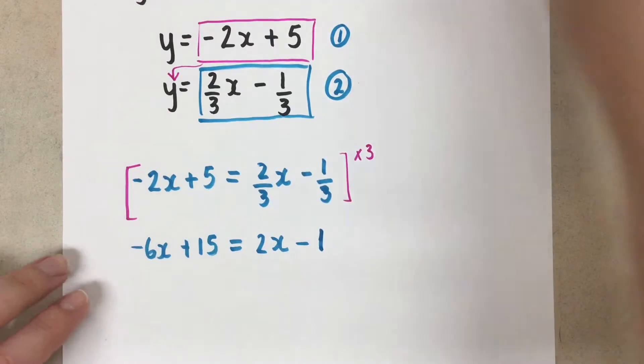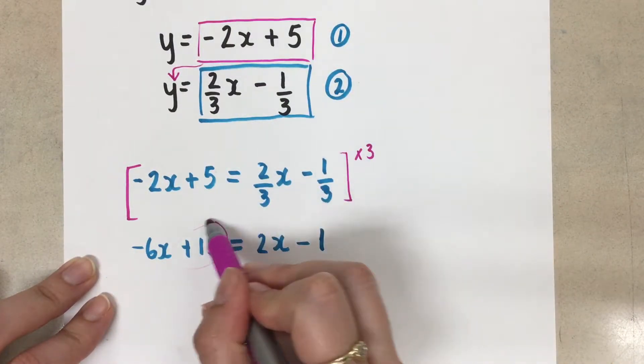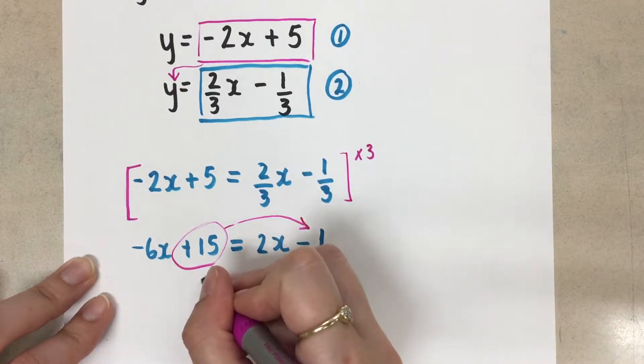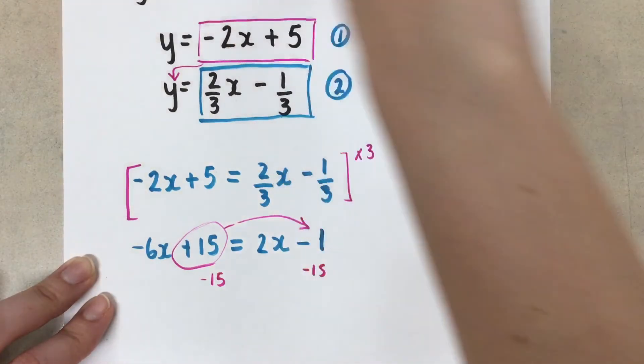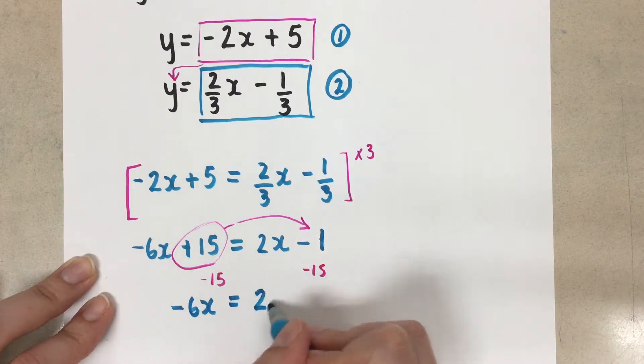So now let's combine like terms. I'm going to move this plus 15 here over to the other side. So we'll do the opposite, minus 15 on both sides.